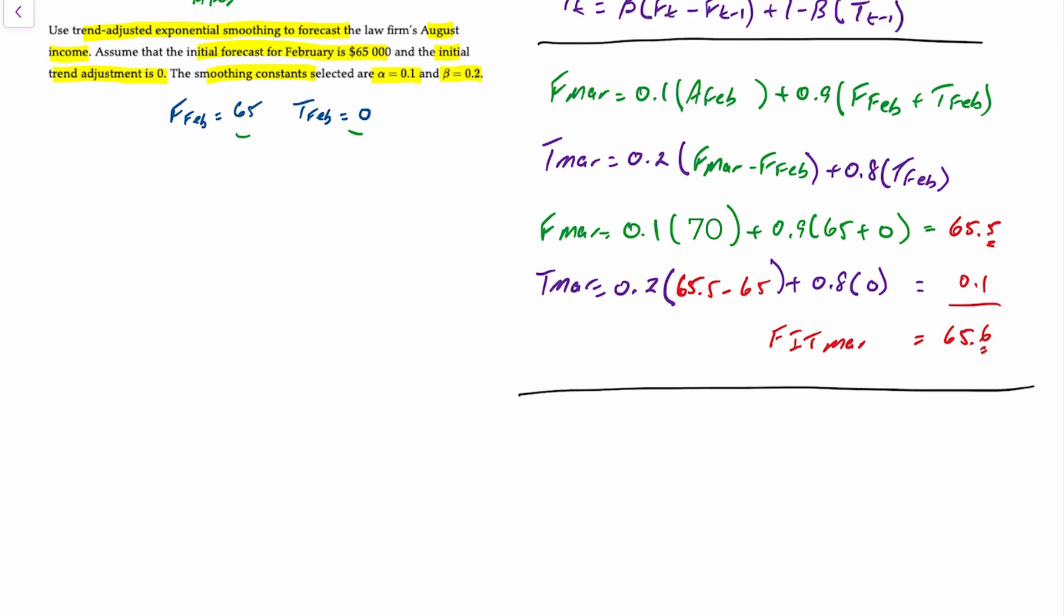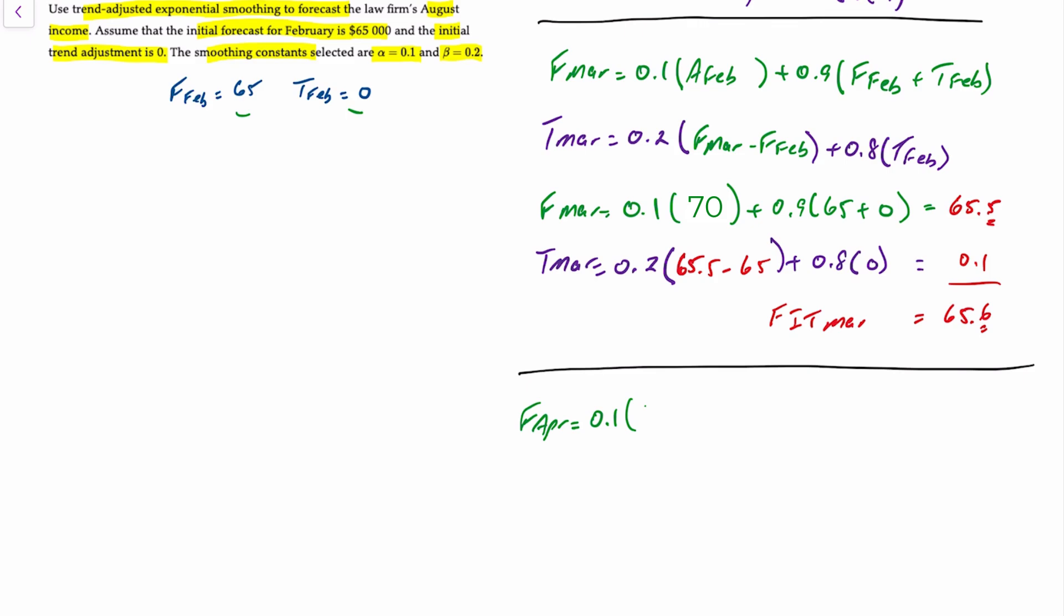I'll illustrate this again once more using April, and then you can stop the video if you like and confirm the remaining values on your own. The forecast for April is equal to 0.1 times the actual for March, which is 68.5, plus 0.9 times March's forecast of 65.5 plus the trend of 0.1. That works out to about 65.9.